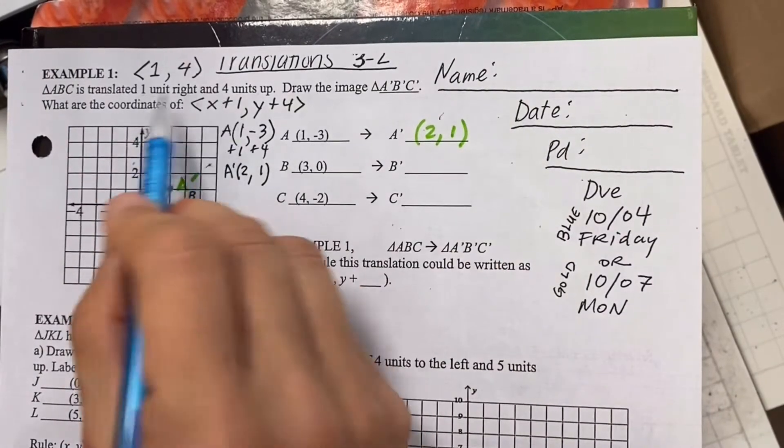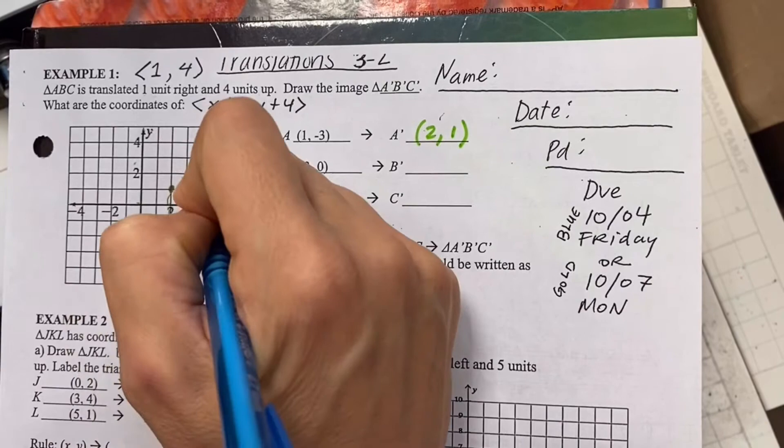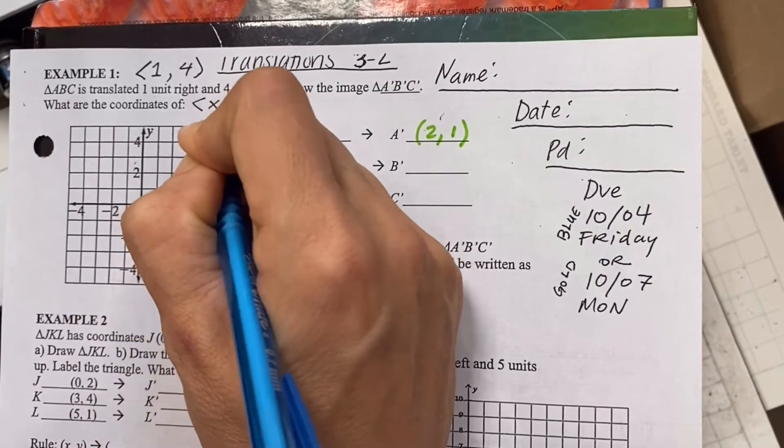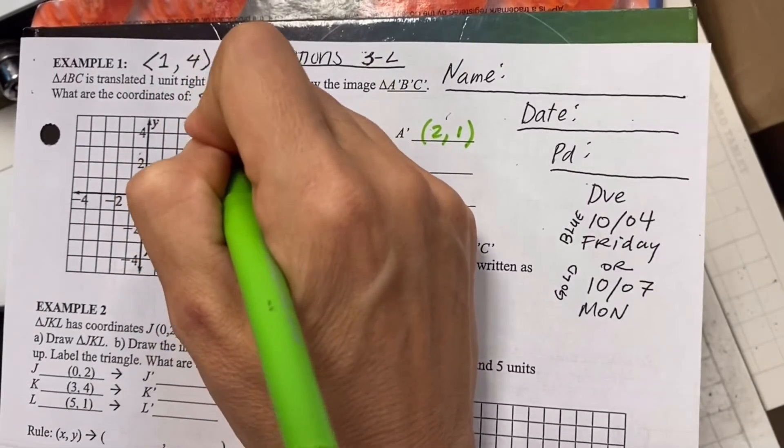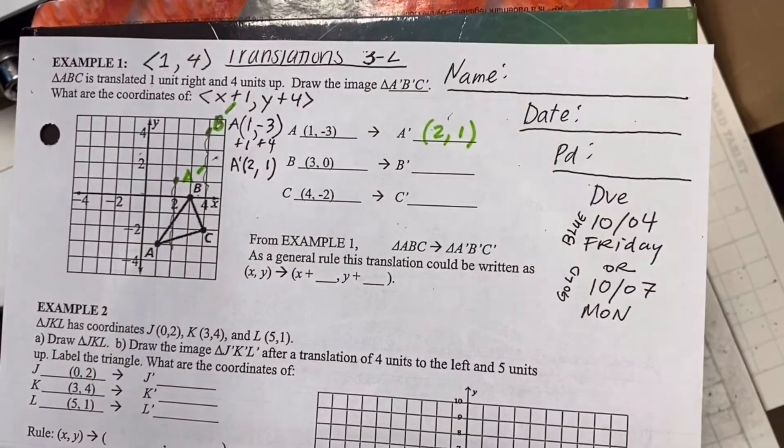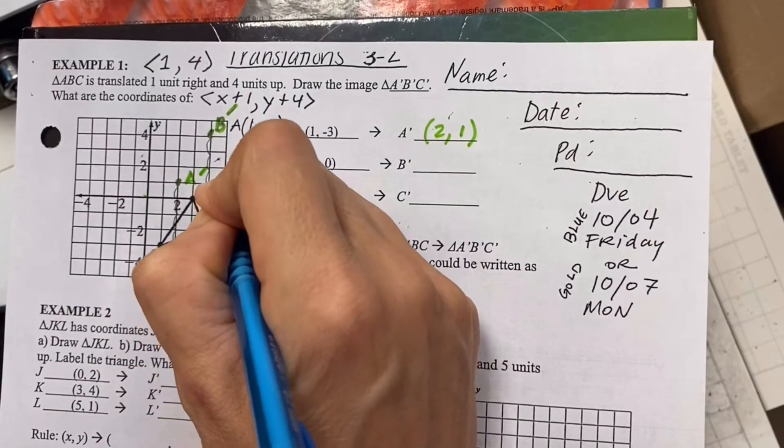Now B also got the same orders. Move right one, four up. Right one, four up. So that's where B prime, the new location of B. And then C, same thing. One over four up. One, two, three, four.